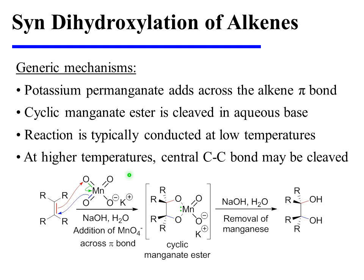When potassium permanganate is used as the oxidant, the reaction begins in a way that is mechanistically very similar to the reaction with osmium tetraoxide. The alkene pi bond attacks one of the oxygen atoms of the permanganate. A manganese-oxygen pi bond is pushed onto manganese to reduce it, and a second manganese-oxygen pi bond is used to attack the carbon of the alkene that would otherwise have lost a bond. This results in the formation of a cyclic manganate ester, and that intermediate can be cleaved upon exposure to aqueous base. It's important to note that this reaction is typically conducted at low temperatures, because at higher temperatures the central carbon-carbon bond may be cleaved as the substrate is further oxidized.